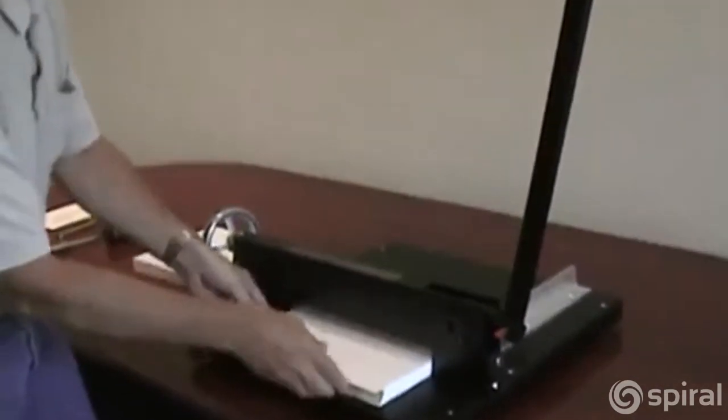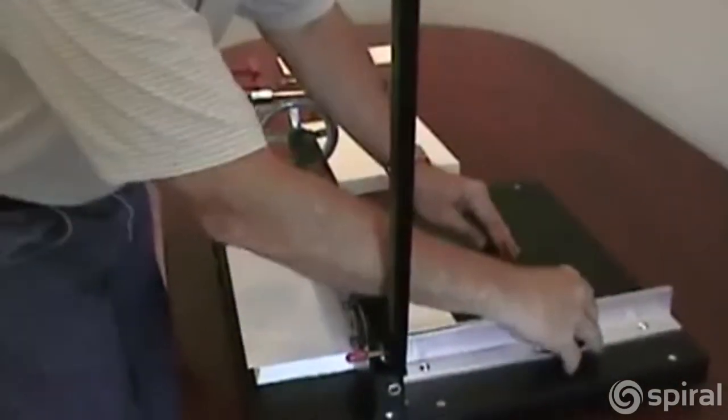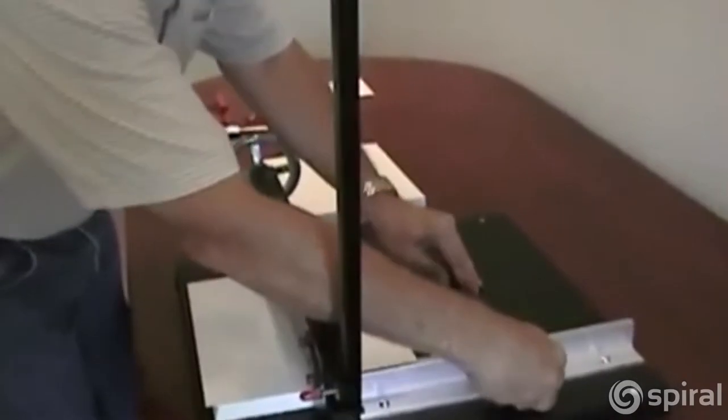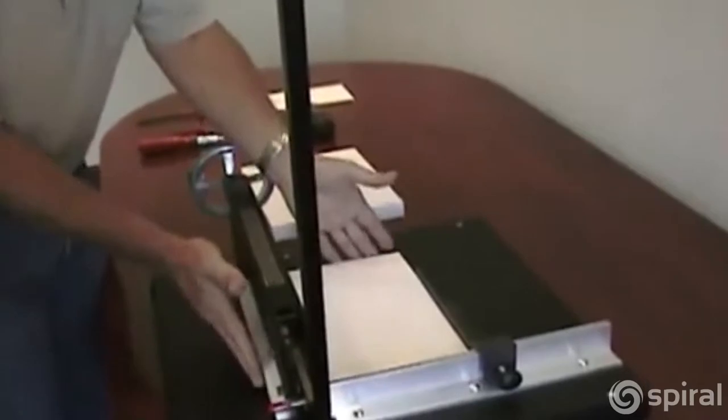Just slip it in through the front of the machine. Adjust your back gauge to whatever measurements you want, and slide your paper back there and make sure that it's nice and square.